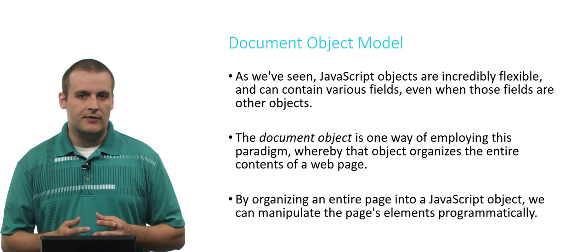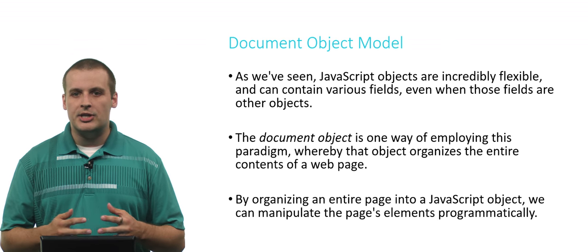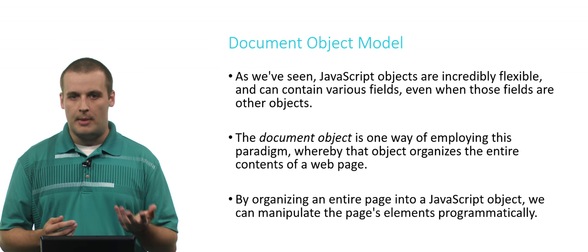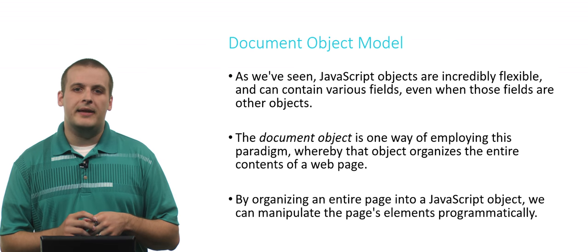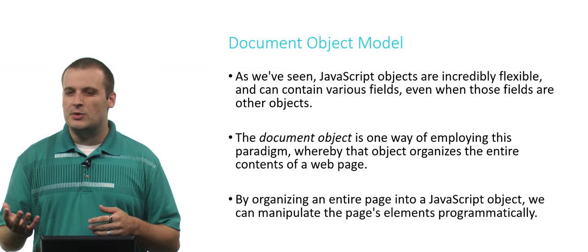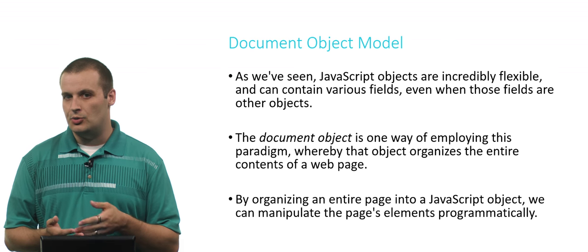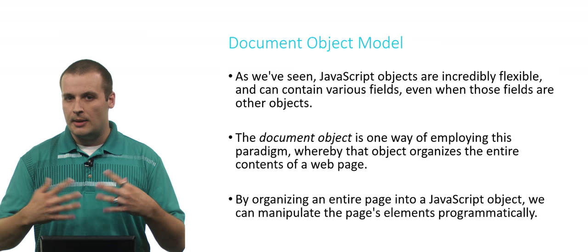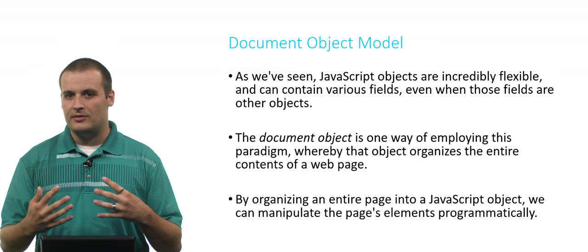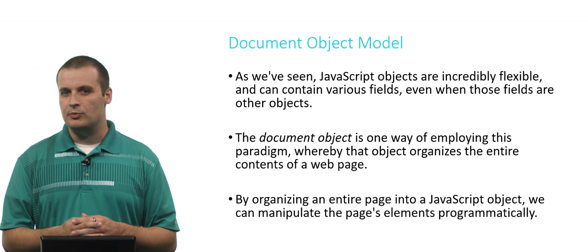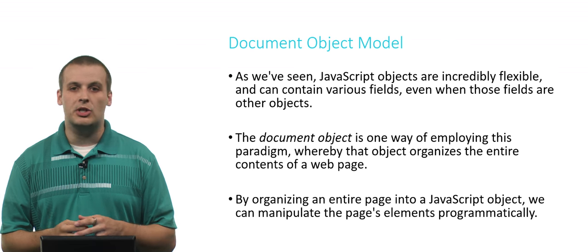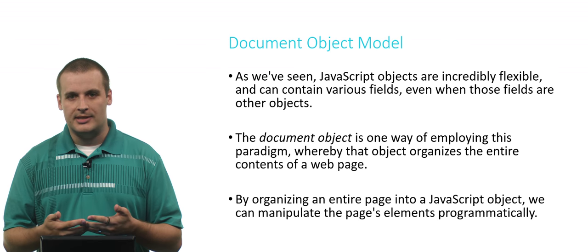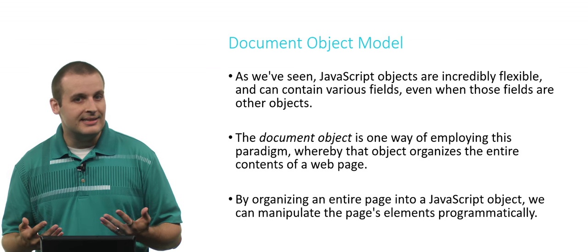You may recall from the JavaScript video that objects contain two different things basically — properties, or data, and methods, which are functions that apply just to those objects. What we didn't get into in a lot of detail was that those objects are actually pretty flexible. You can not only put data in there, you can also put other objects or arrays inside of them.